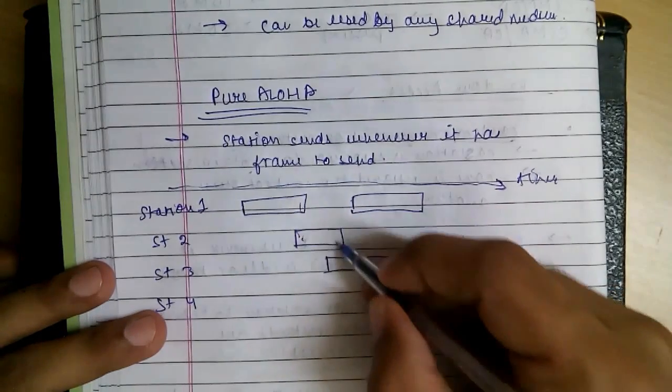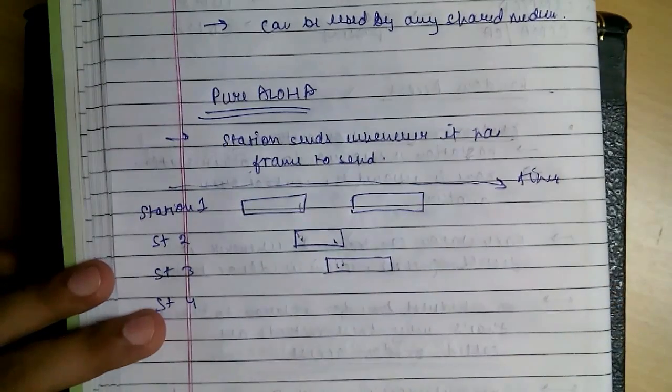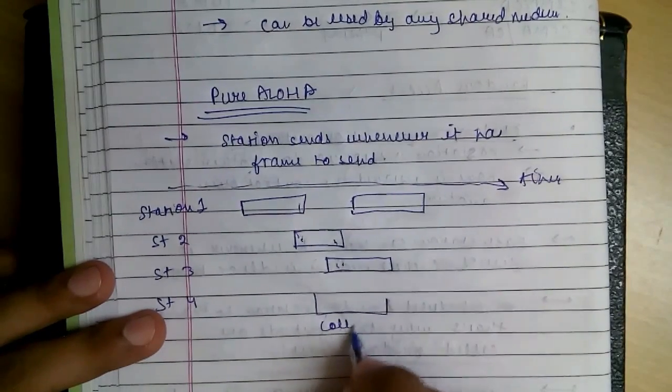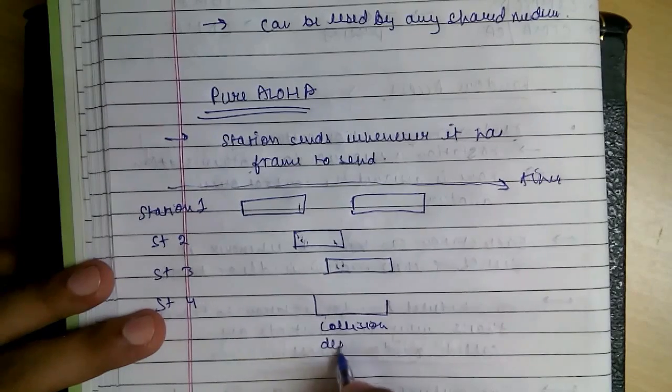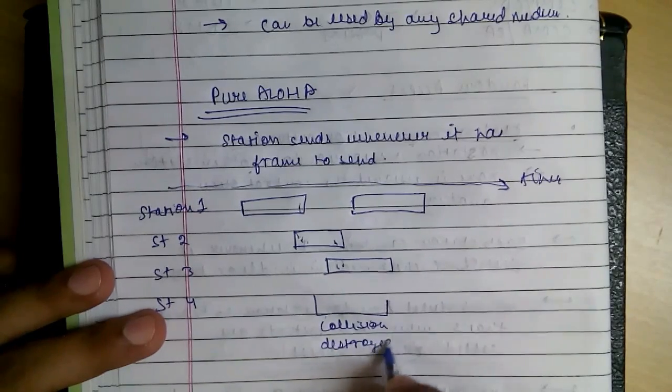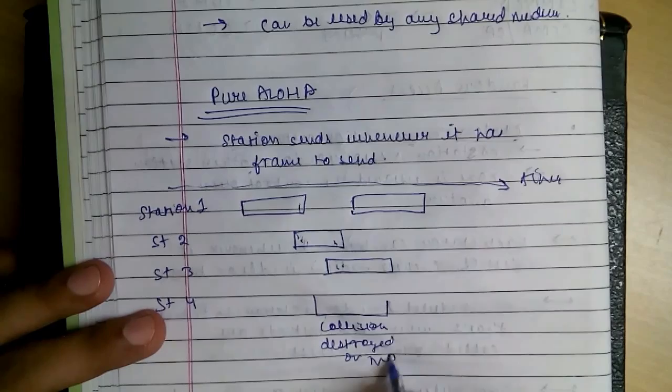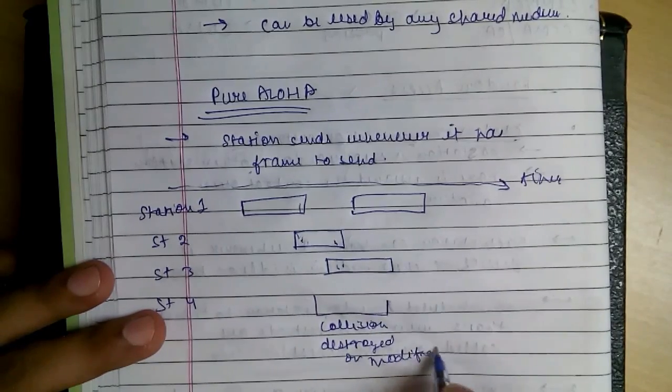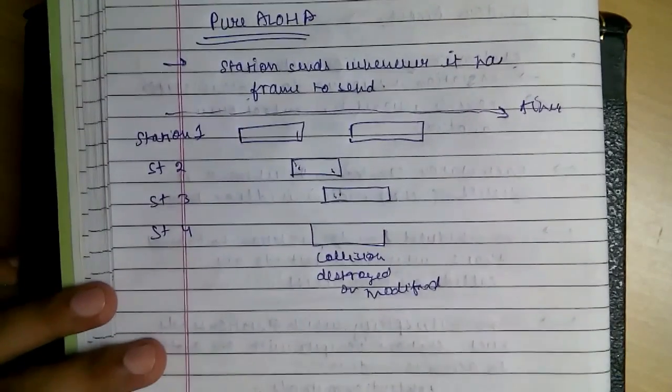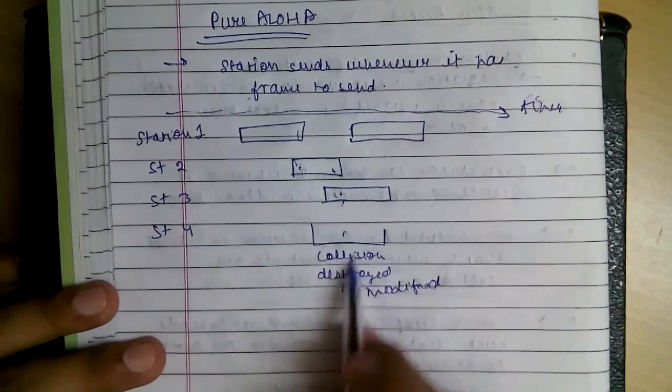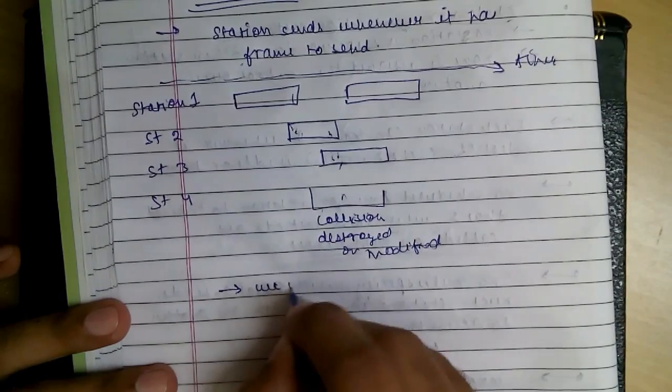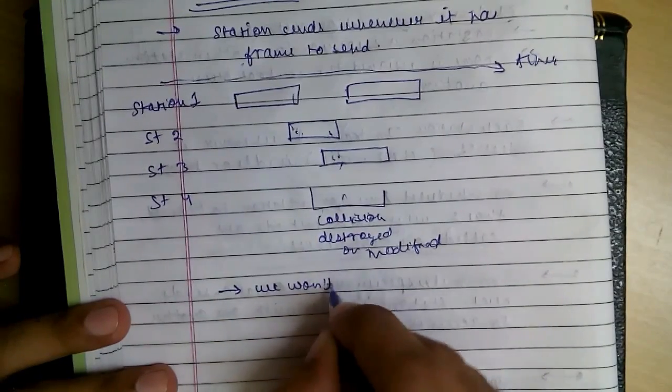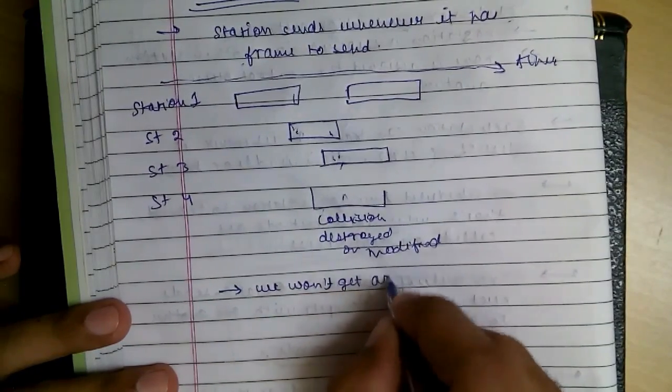You can see there are collisions. And during collisions, these frames will be either destroyed or somehow modified. When collision happens, the frames are destroyed and we won't get acknowledgement.